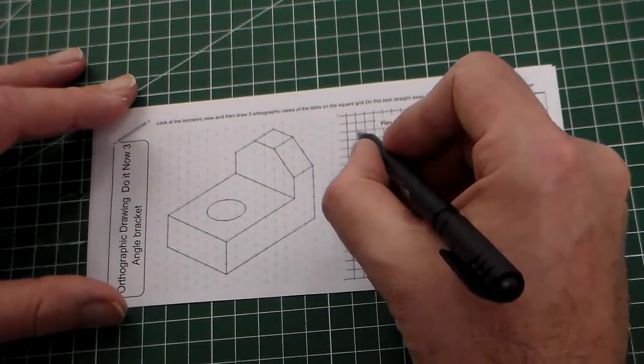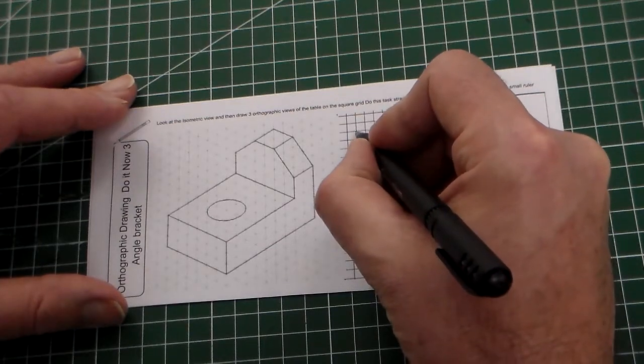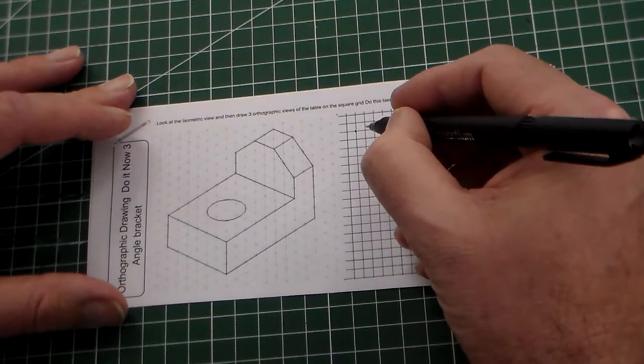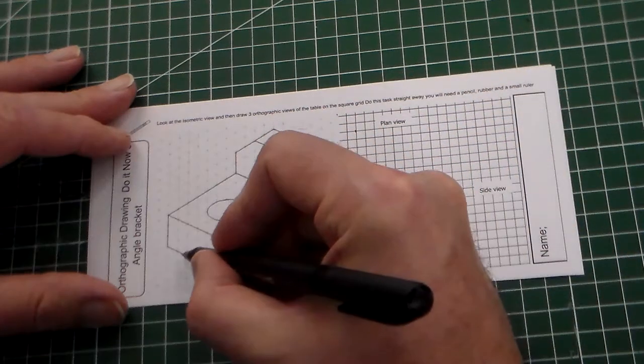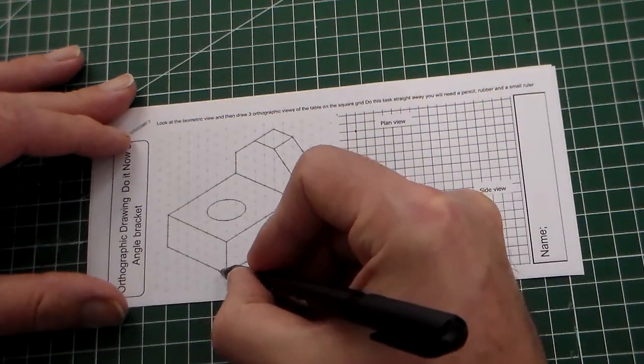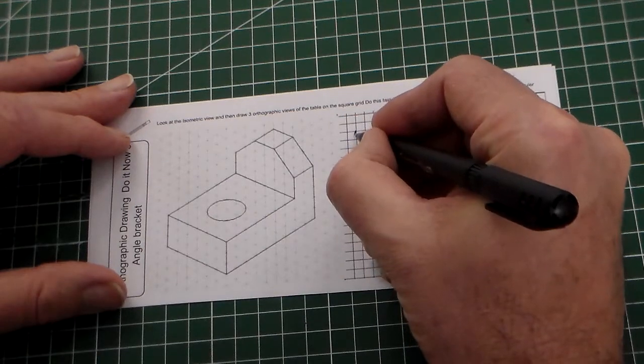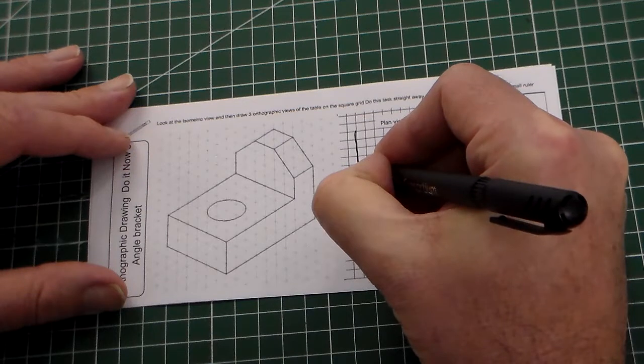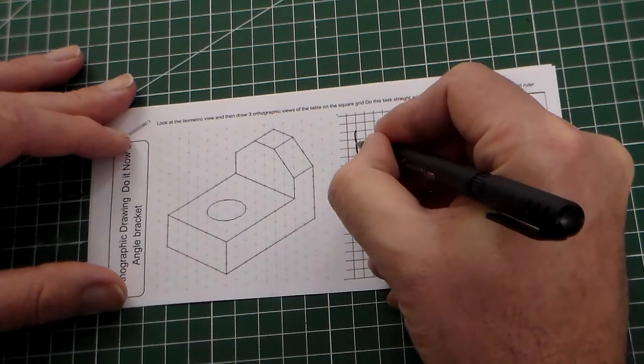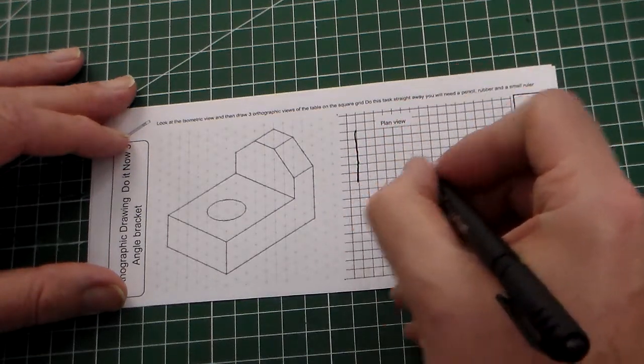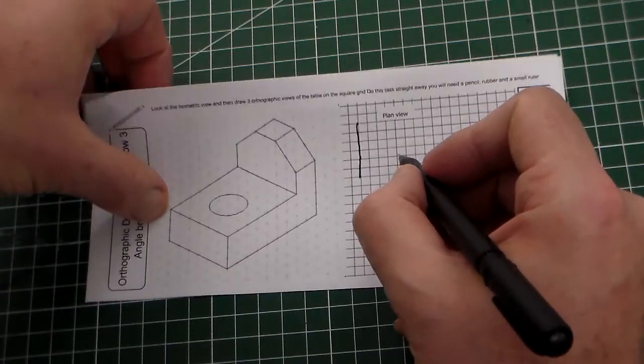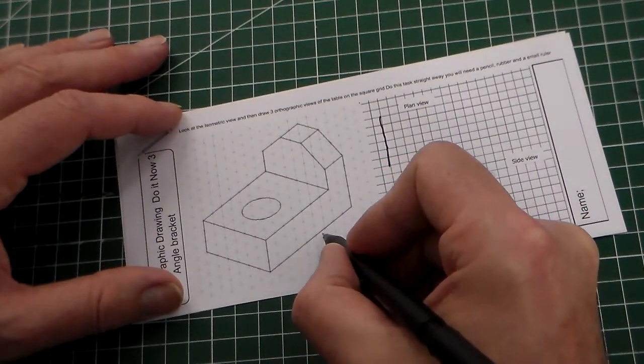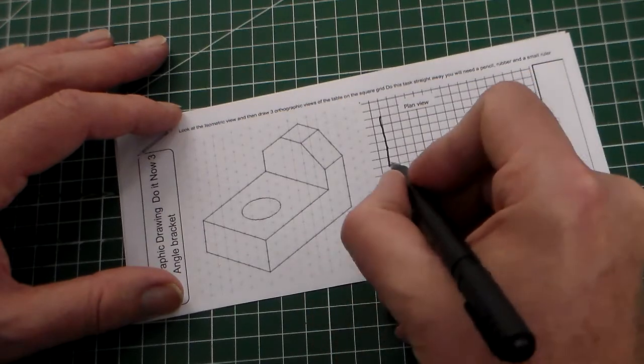I'm going to start off here. If we start at that point there, that will give us plenty of room. We've got one, two, three, four, five, six, so if we come down six there, and then we need to come across one, two, three, four, five, six, seven, eight, nine.